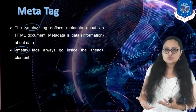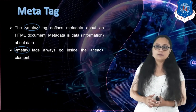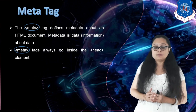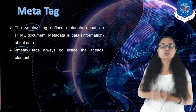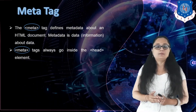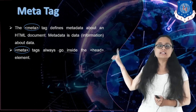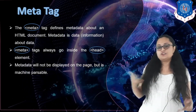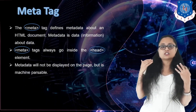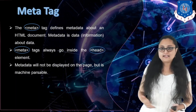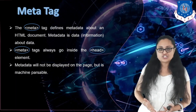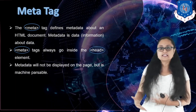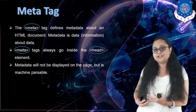Since the meta tag gives information about the HTML document, it is written inside the head tag, not inside the body. The metadata specified in the meta tag is not displayed on the web page because it is written in the head portion. It is machine parsable, meaning the machine is able to interpret whatever you write in the meta tag.